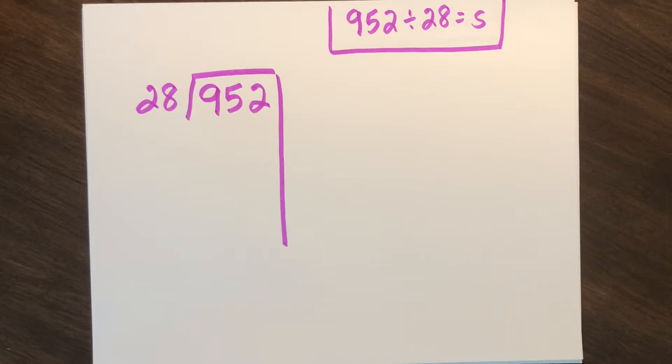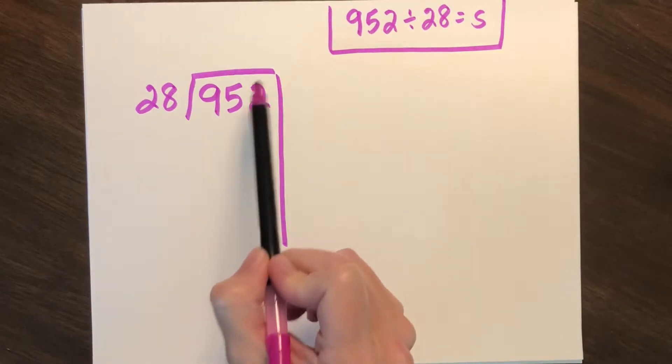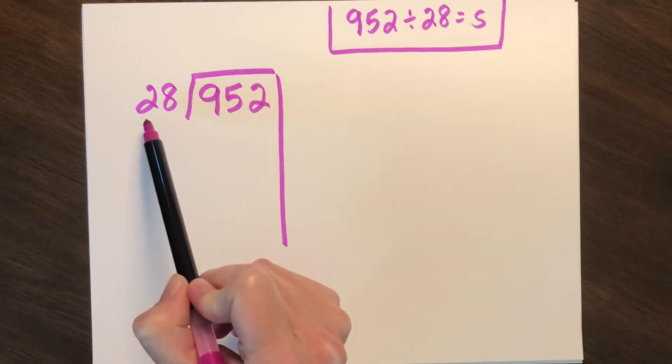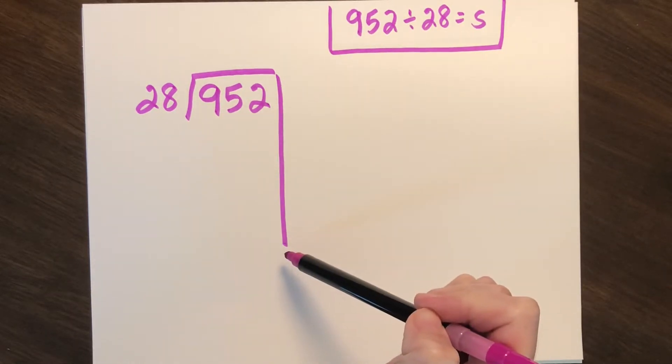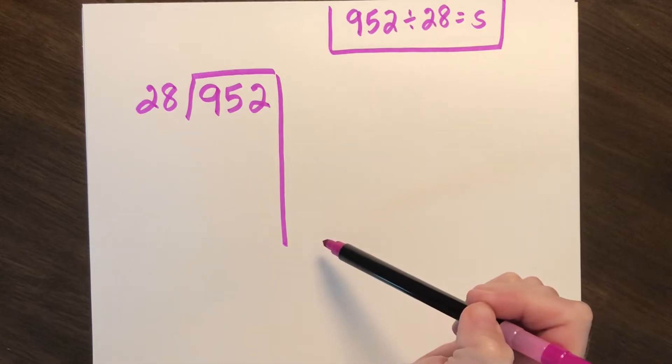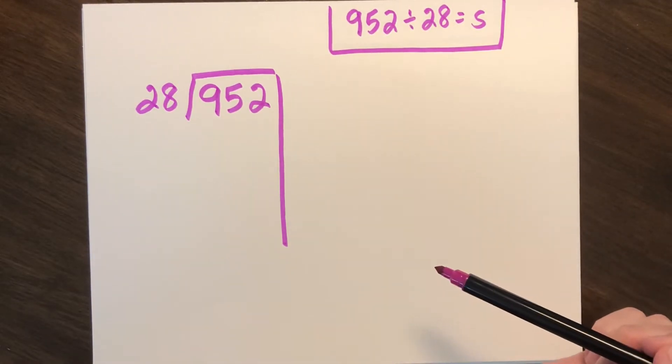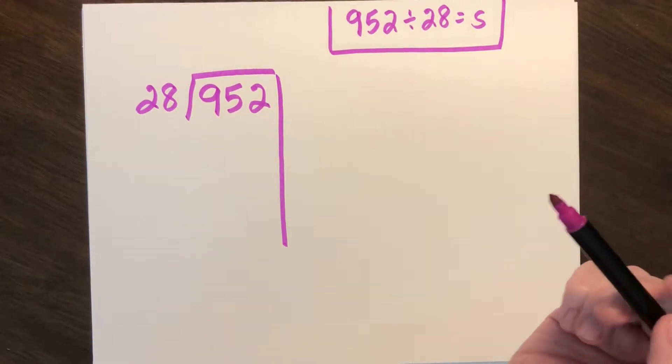Did you set up your problem like mine? Your dividend inside the dividing bracket with your divisor on the outside and your vertical line to organize your partial quotients. Do you have enough space to show your work and your thinking? Excellent. Now let's get started.